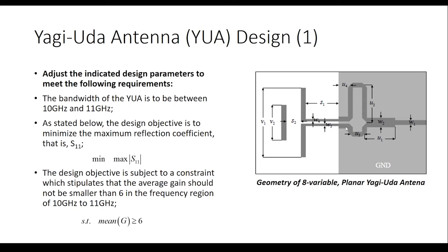Again, we're going to adjust the geometry. The bandwidth this time is going to be between 10 and 11 GHz, and the objective is to minimize the reflection — S11 — so we're going to minimize the maximum reflection in the 10 to 11 GHz range. This time it's subject to a design specification constraint: the average gain should not be smaller than 6 in the frequency region of 10 to 11, which is equal to 15.56 dB.